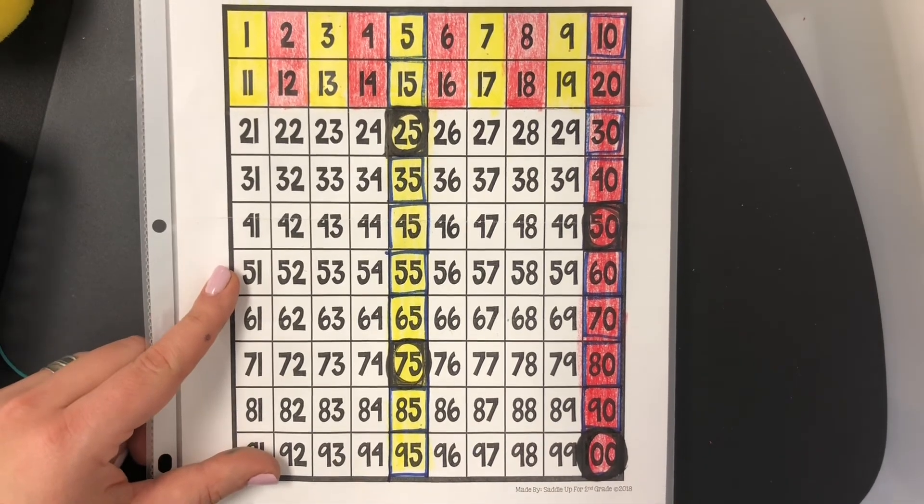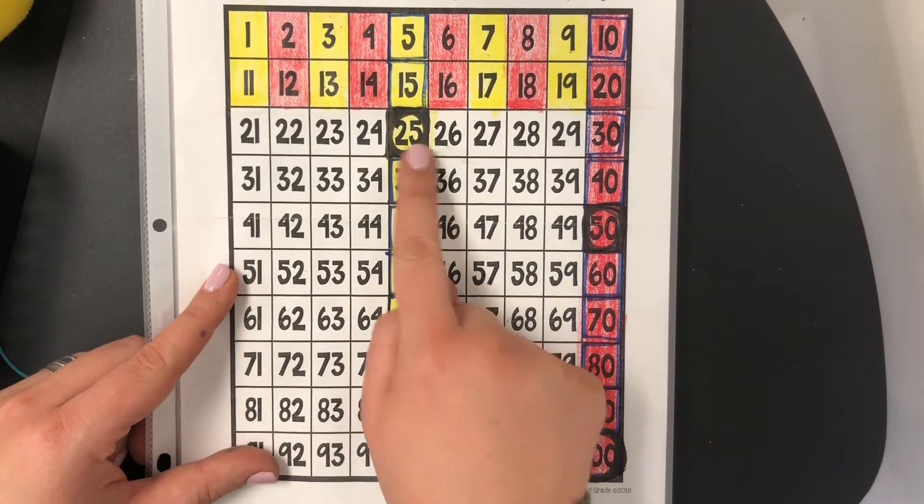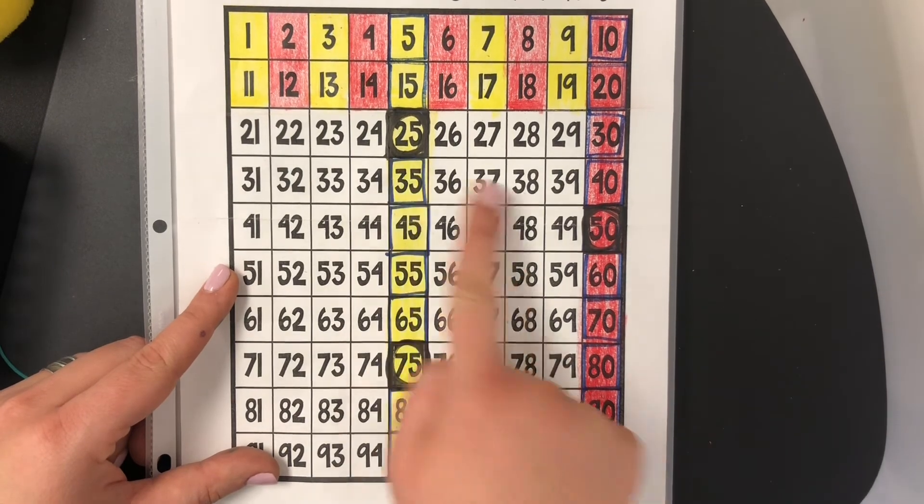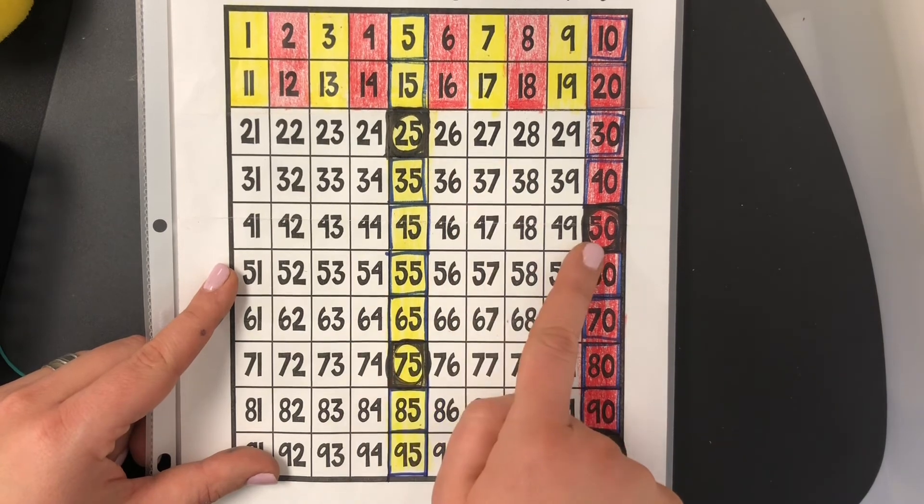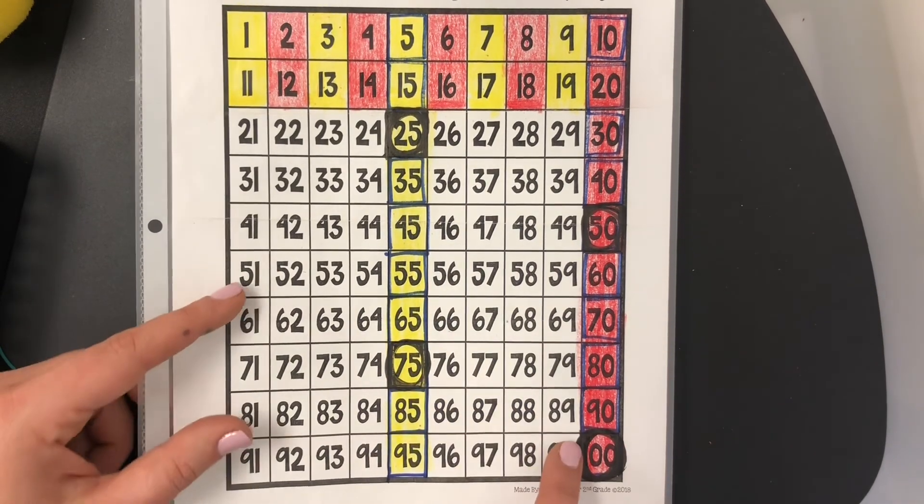If we're counting by quarters which is the largest coin it's with a black circle. So 25, 50, 75, 100. Again 25, 50, 75, 100.